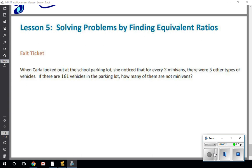So this first problem says when Carla looked out at the school parking lot, she noticed that for every two minivans there were five other types of vehicles. If there are 161 vehicles in the parking lot, how many of them are not minivans? So there's a key right there that at the end we're looking for not minivans. The ratio says for every two minivans there are five other types of vehicles. So my initial ratio of two to five, two is minivans and five is other vehicles.